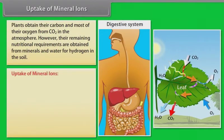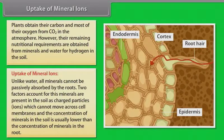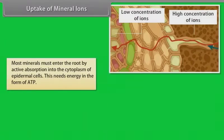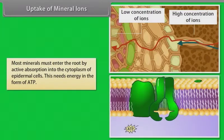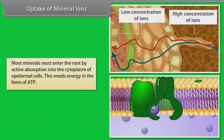Let us first know, how do they uptake mineral ions? Unlike water, all minerals cannot be passively absorbed by the roots. Two factors account for this: minerals are present in the soil as charged particles or ions which cannot move across cell membranes, and the concentration of minerals in the soil is usually lower than the concentration of minerals in the root. Therefore, most minerals must enter the root by active absorption into the cytoplasm of epidermal cells. This needs energy in the form of ATP.